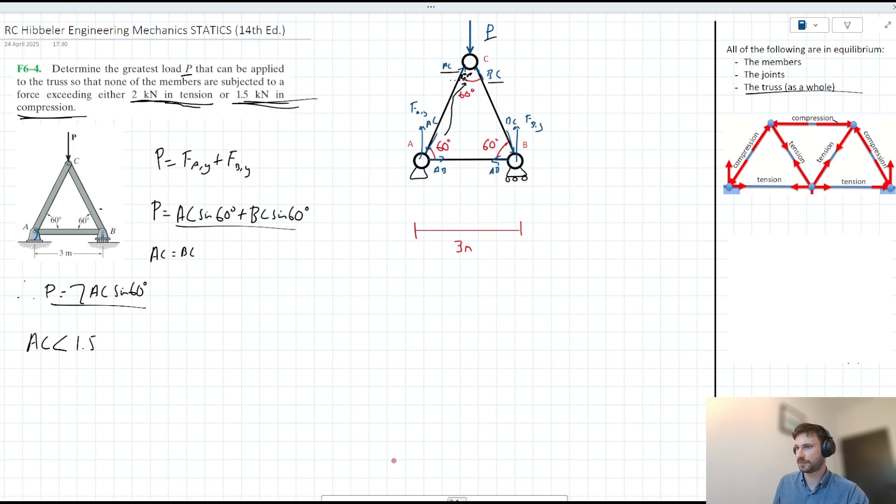We could take that and we can substitute into this idea that we derived earlier here. And we can say, we can say then that P is less than or equal, is less than 2 times 1.5 sin 60, which when we plug into our calculator, we find that P is less than or equal to 2.6 kN here. Or maybe I should say this to three significant figures and say it's 2.60 kN. Okay. So we've considered this 1.5 kN in compression idea here. And we've kind of suggested what the maximum value for P should be where members AC and BC are concerned.